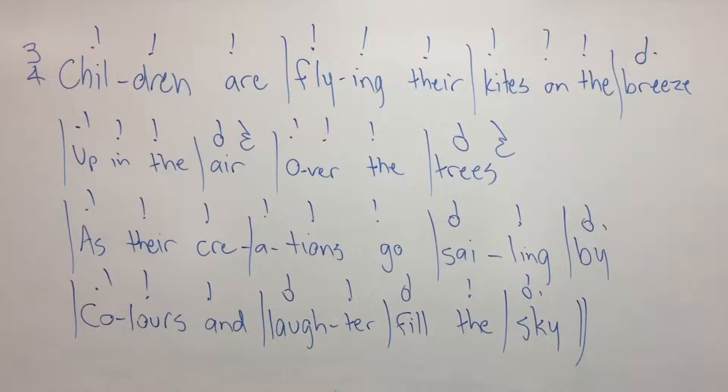So now we have quite a lot of information about our composition and we haven't written a note. We've got a time signature, bar lines, and the melodic rhythm. So now we're ready to start thinking about pitch. Let's pick a key signature. And again, the words will tell us whether we should be using a major key or a minor key or even some other form of tonality.